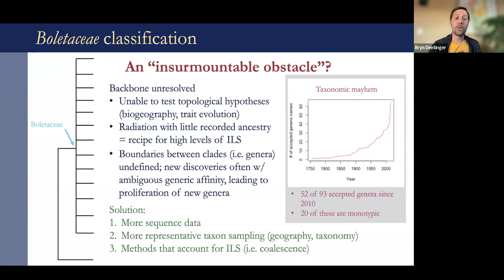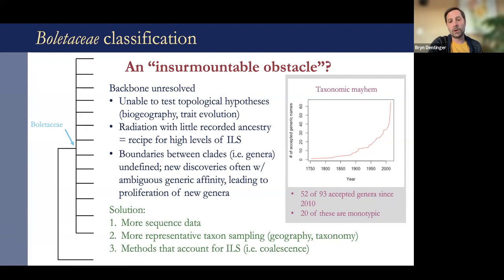So are there potential solutions? Yes. One is more sequence data and more representative taxon sampling — meaning more geographic as well as taxonomic representation. Most previous studies have been biased towards North American, European, or Asian taxa, without a good global sampling in a single study yet. And the third part is a technical or analytical approach where we can actually attempt to account for that incomplete lineage sorting problem using some special techniques.